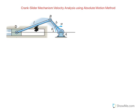The absolute motion method: basically what you want to do is define the position of this slider. Since our objective is to find velocity of D, you want to find velocity of D. That's our goal.